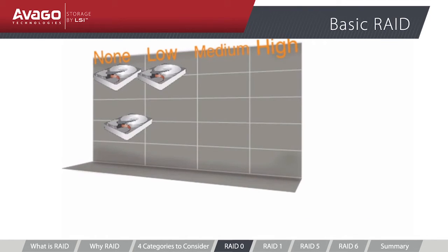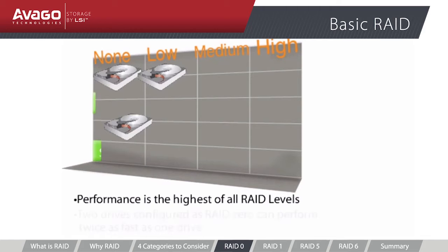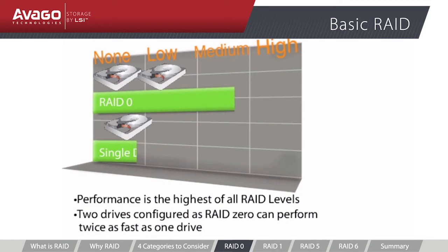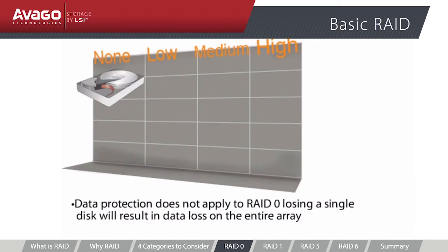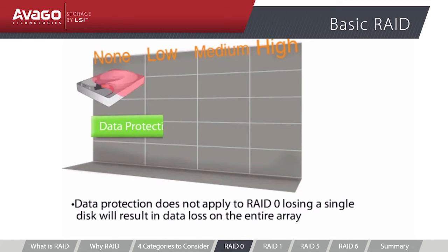Performance with RAID Zero is the highest of all RAID levels and typically scales with drive count. For example, two drives configured as RAID Zero will perform approximately twice as fast as one drive, and with the addition of more drives, performance will scale linearly until other system bottlenecks are encountered. Data protection does not apply in RAID Zero as there is no redundancy; losing a single disk drive results in the loss of data on the entire array, and data has to be recovered from a backup source.